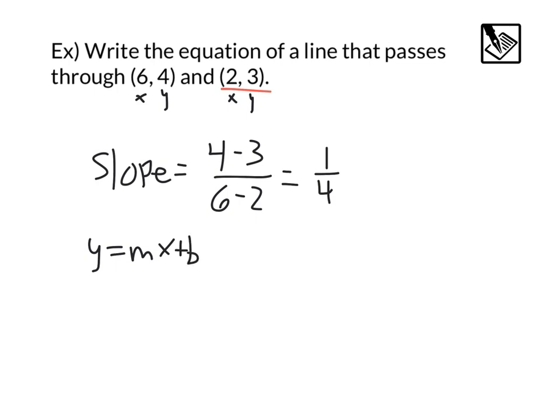And we're going to plug in our y value of 3 equals our m, that's the slope that we found, 1 fourth times x. Our x coordinate that goes with the point we chose is 2 plus b.